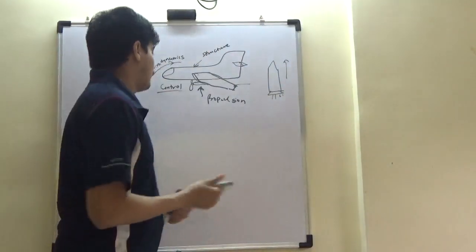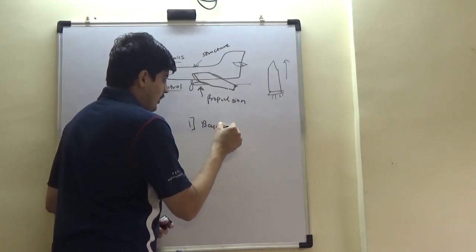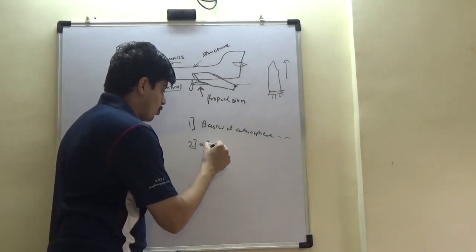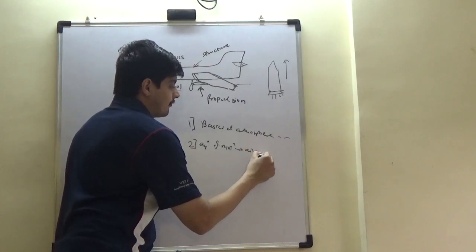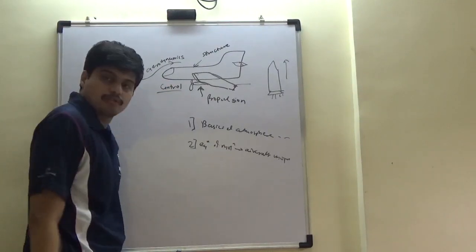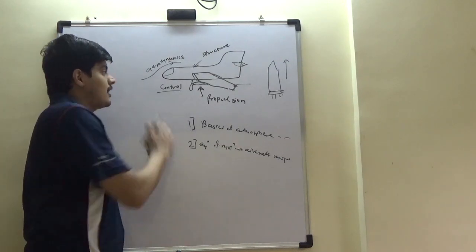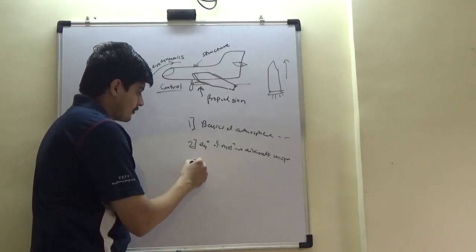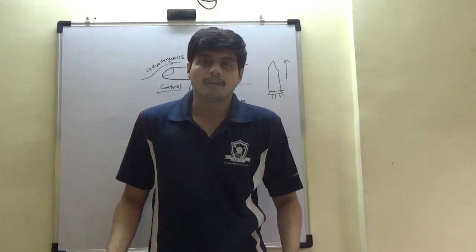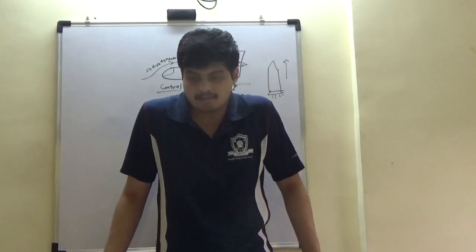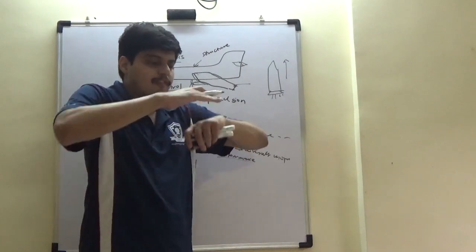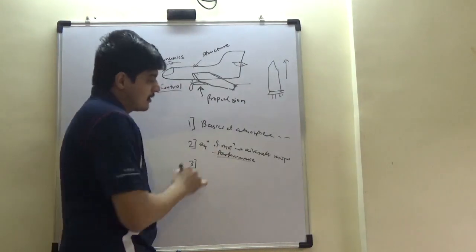Flight mechanics typically has four parts. First is the basics of atmosphere — where things fly, altitudes, and how they combine. Second is equations of motion, simply aircraft motion, where you look at the aircraft as a body and apply the full Newtonian set of equations of motion to understand how it flies. Third is performance — will the aircraft fly 1,000 kilometers before exhausting its fuel? Will it reach 20 kilometers altitude? Can it fly 1 meter above the sea surface?